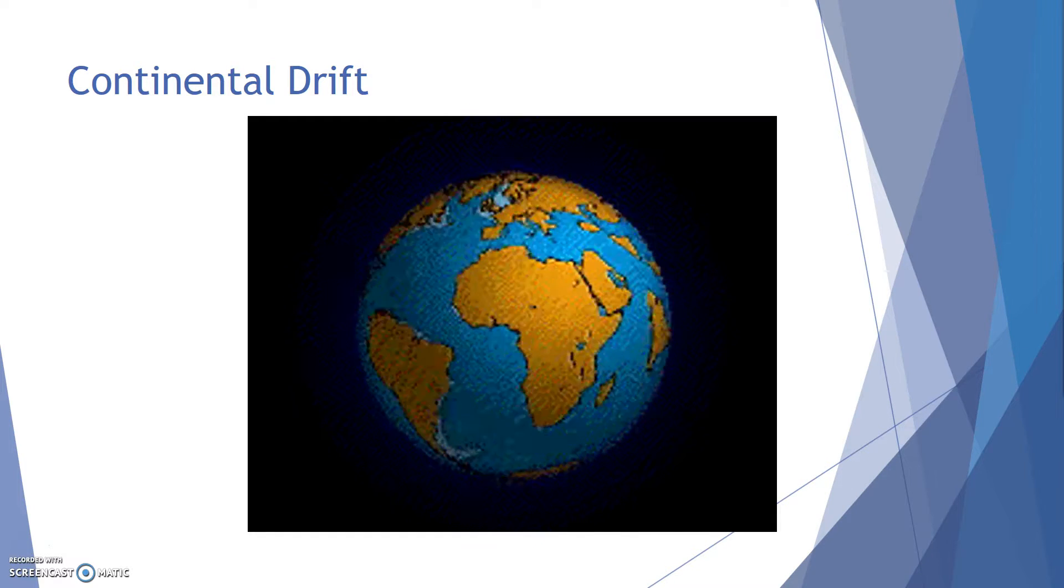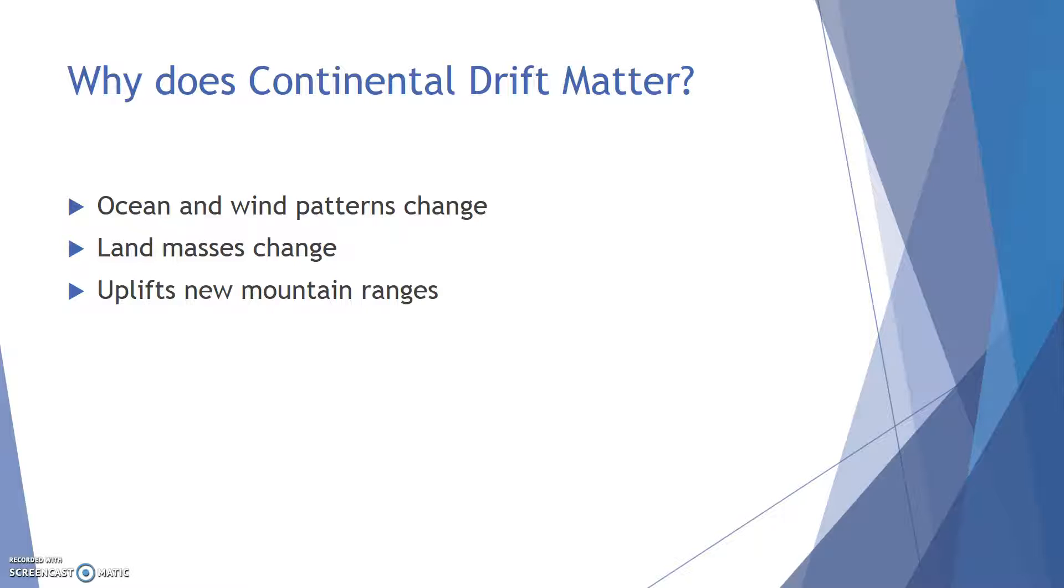So why does continental drift matter? Well, continental drift, the fact that these continents are moving further and further apart, speaks to the fact that it can change some of these important characteristics of our planet. As the continents move, we can have changes in the ocean and the wind patterns. Changing the ocean and the wind patterns can affect heat transfer. We know that waters or large bodies of water can act as heat sinks, so changes in these patterns can affect the way that heat is distributed across our planet.